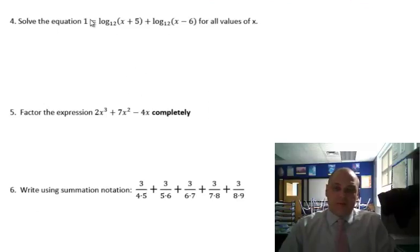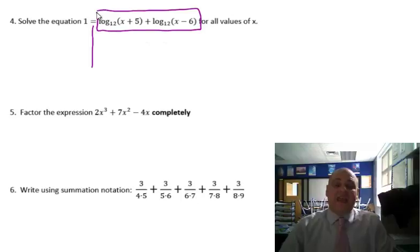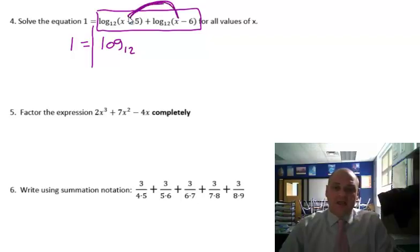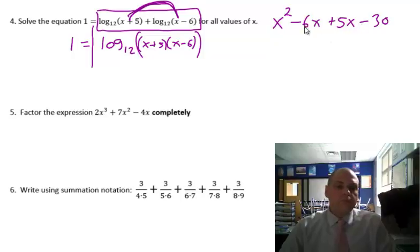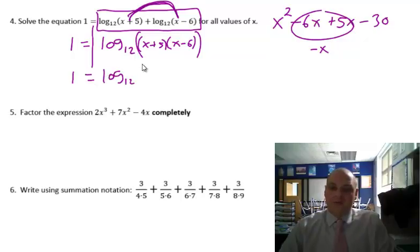To solve a log equation, remember here's the equal sign — this is the left side, this is the right side. You have to combine any logs that are on the same side of the equation. So this is just going to be 1 equals. We have to combine these logs: log base 12, and because it's addition of the logs, we need to multiply what's in the logs. So it's going to be x plus 5 times x minus 6. That gives x squared minus x minus 30. So it's going to be 1 equals log base 12 of x squared minus x minus 30.